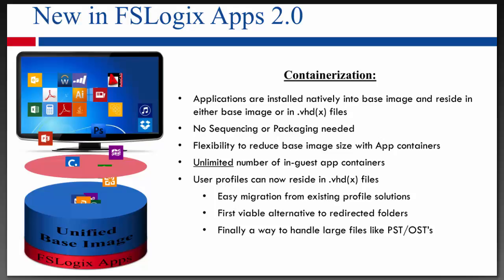Also in 2.0, we can offload profiles to VHD or VHDX files as well. If you're using an existing profile solution today — roaming profiles, profile management, etc. — we have a migration tool so we can take your existing profile and move it into a profile container. It's a very good solution over redirected folders because we operate at a block level mount, reducing the number of calls back to your file server and helping with scalability. Things like OST and PST files, we can put those in our profile containers as well. Use cases like Office 365 are becoming more and more common, and users want to enable offline cached exchange mode — with our profile containers, we can make that a reality.